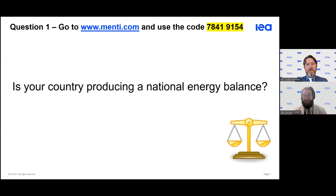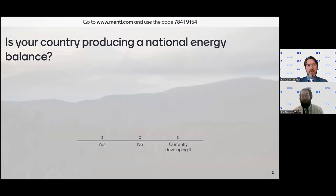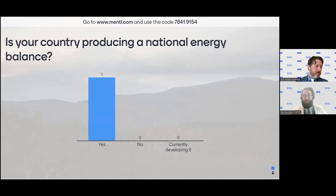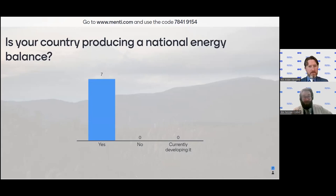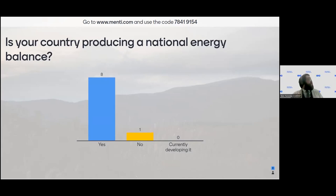Before we start, we have a Mentimeter poll for you. The code is 7-8-4-1-9-1-5-4. The question is: are you aware of, or are you working directly on, the production of your national energy balances for your country? We already have seven people who know their country produces national energy balances, which is nice, but we have around 87 participants so there may be more.